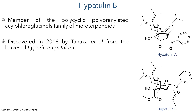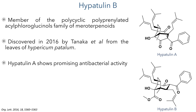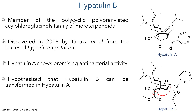Hypatulin B was first discovered in 2016 by Tanaka et al. from the leaves of the Hypericum patulum plant. These compounds are members of the polycyclic polyprenylated acylphloroglucinol family of meroterpenoids. Preliminary screening shows that Hypatulin A has promising antibacterial activity, and structural analysis suggests that Hypatulin B can easily be transformed into the more bioactive Hypatulin A.